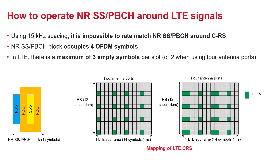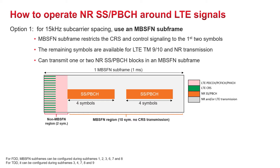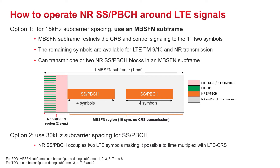On the other hand, the SSB/PBCH beams cannot be rate-matched since they occupy four OFDM symbols. Because of the LTE CRS, there is a maximum of three empty symbols within an LTE slot, or a maximum of two when using four antenna ports. Therefore, other options are required. Option one is to use an LTE MBSFN subframe. This method restricts the CRS and control signaling to the first two symbols, and the remaining empty symbols can fit one or two SSB/PBCH beams within the subframe. Option two is to use 30 kHz subcarrier spacing, which results in mixed numerology and has its own challenges beyond the topic of this video.